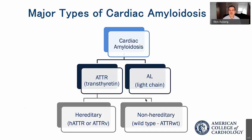Most clinicians will encounter one of two principal types. TTR, or transthyretin, is also known as prealbumin. It's a protein secreted by the liver that under certain conditions misfolds into amyloid. ATTR is further subdivided into two types: the hereditary type, called ATTR-V, and the non-hereditary type, called wild-type, or previously known as senile cardiac or senile systemic amyloidosis. Wild type is genetically normal, while the hereditary or variant form results from single nucleotide polymorphisms in the TTR gene that precipitate destabilization and misfolding.